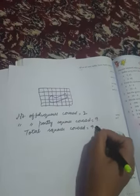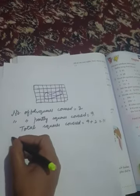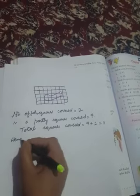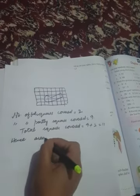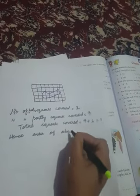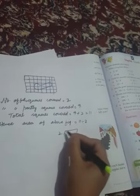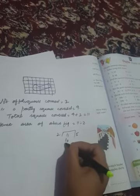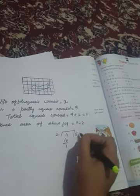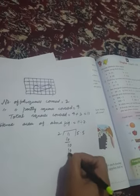That is 9 plus 2 equals 11. Hence, area of above figure is 11 divided by 2. That equals 5.5, and the area is 5.5 squares.